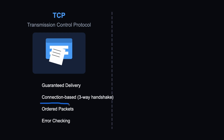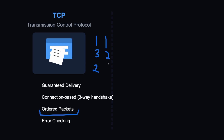TCP is also connection-based, meaning before sending any data it performs a three-way handshake to establish the connection between client and server. It also orders packets — if the client receives packet one, then packet three, then packet two, TCP ensures they are reordered to first, second, and third. This adds overhead but ensures accuracy and reliability.